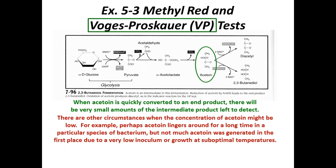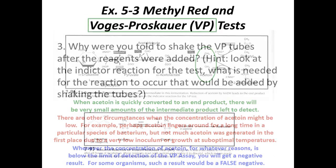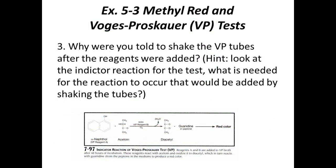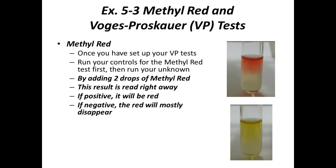There are other circumstances when acetoin concentration might be low — for example, perhaps not much acetoin was generated in the first place due to a very low inoculum. These cultures have been going for much longer than they're supposed to, so we shouldn't have any false negatives. We've had some weird false positives — possibly contamination. If the concentration of acetoin is below the limit of detection of the VP assay, you'll get a negative result, which for some organisms could be a false negative. Why shake the VP tubes after adding reagents? We need oxygen for this reaction — flicking the tube adds oxygen into the liquid and allows the reaction to proceed.